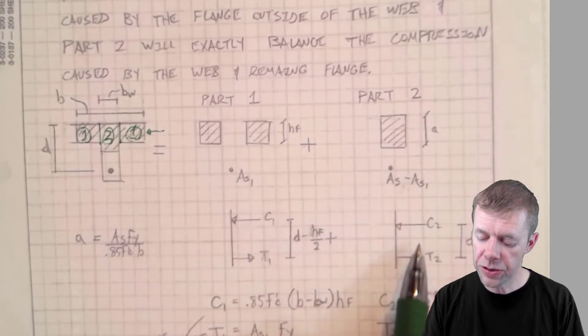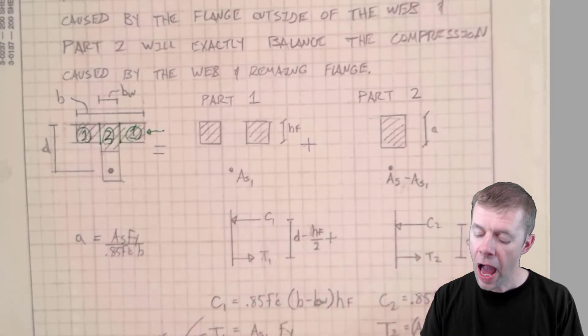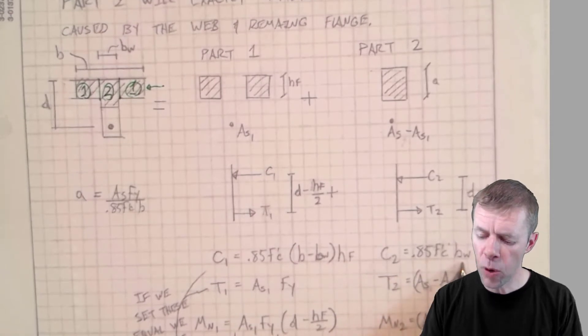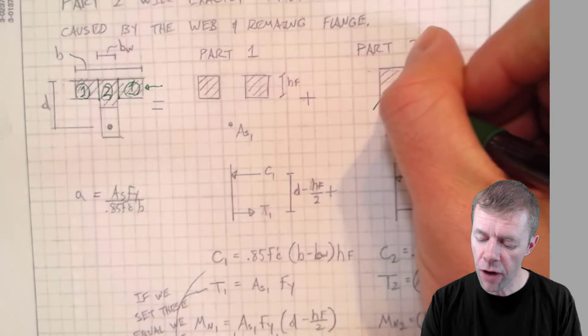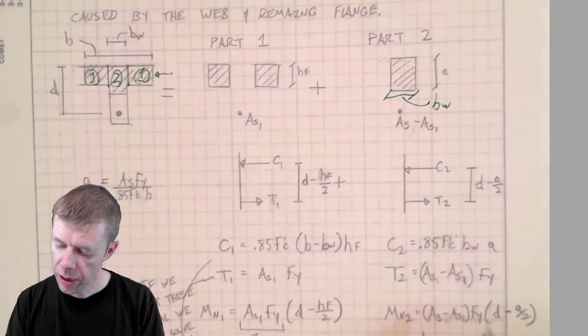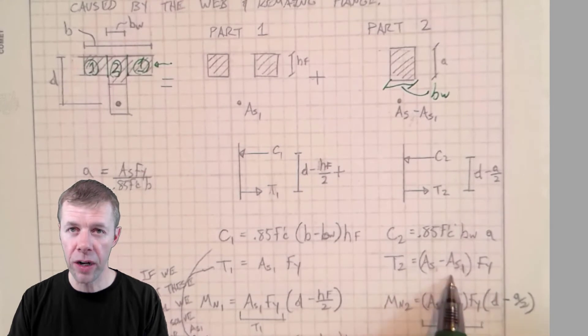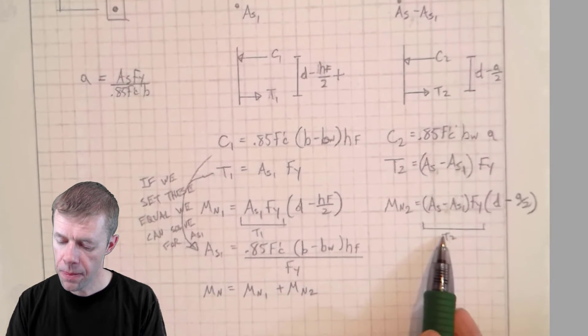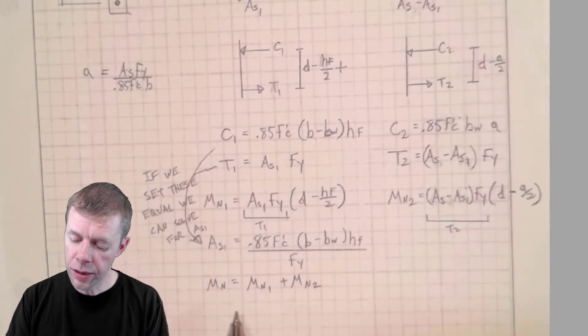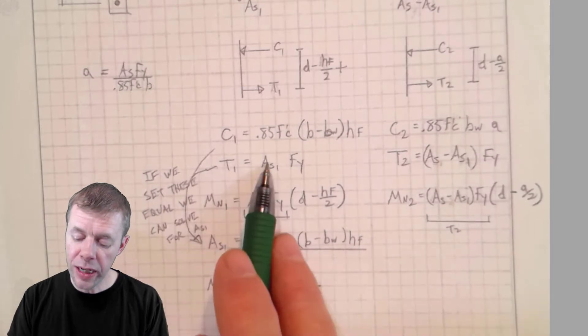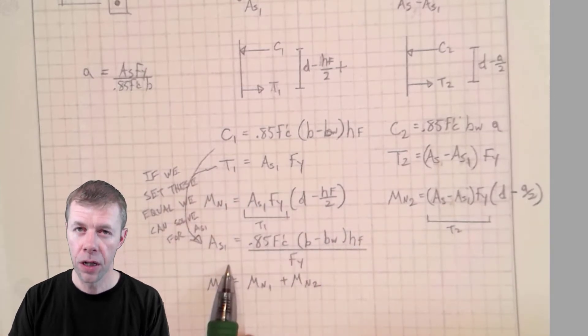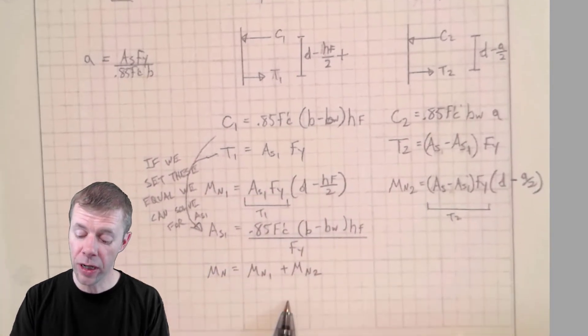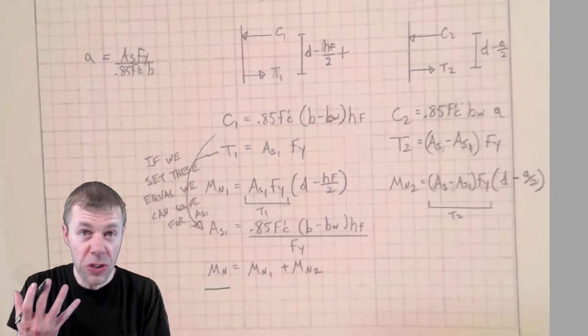I'm going to take the resultant from this, which is going to be C2. And this is going to be T2. And the compression resultant is 0.85 F prime C. That's the stress multiplied by BW. Why is it BW? Because it is the width of the web. And then what's T2? That's my remaining amount of area. AS minus AS1 times FY. And I get another resultant. Now to find AS1, right? If we set these two equal, we can actually solve for AS1 and get the equation here. But the cool thing is I'm going to add this moment plus this moment and I'm going to get the total moment capacity.